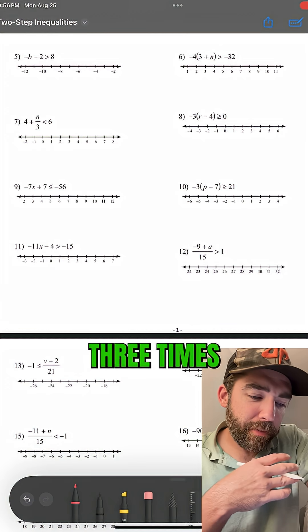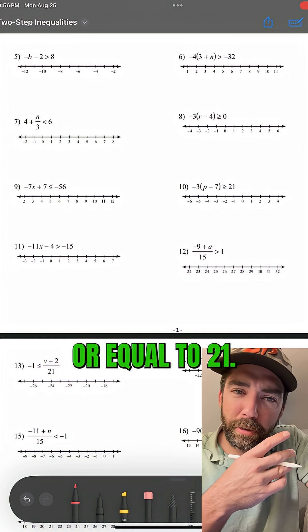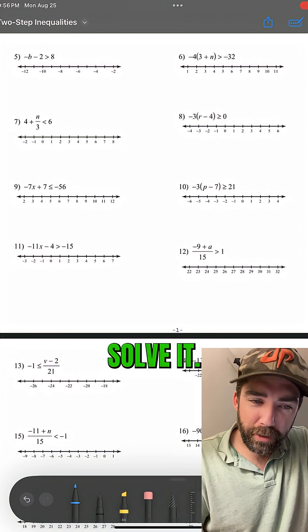Welcome back, mathletes. Negative 3 times p minus 7, greater than or equal to 21. Solve it.